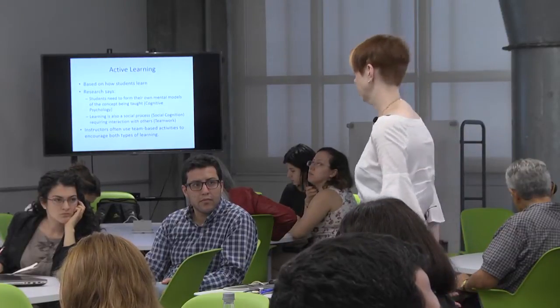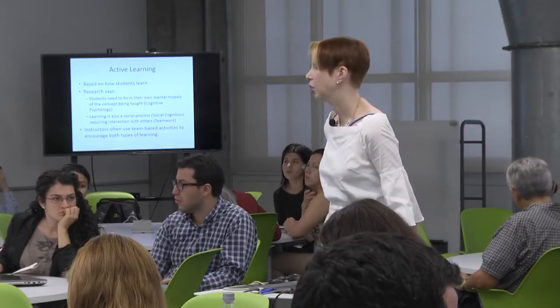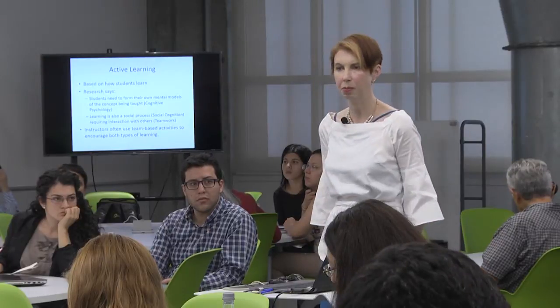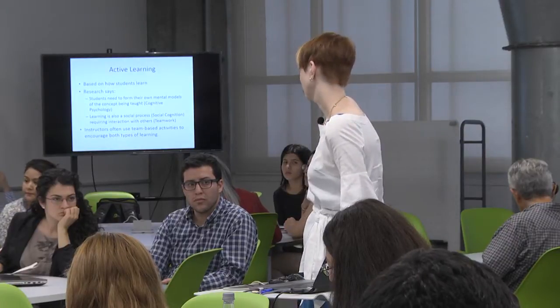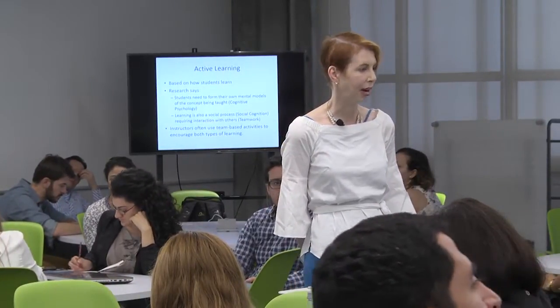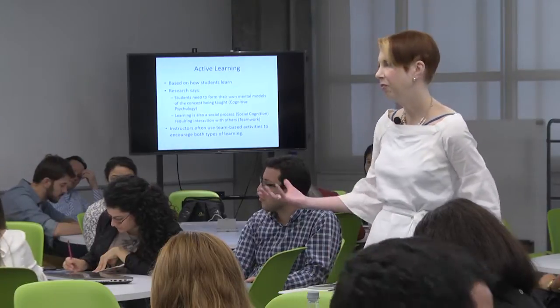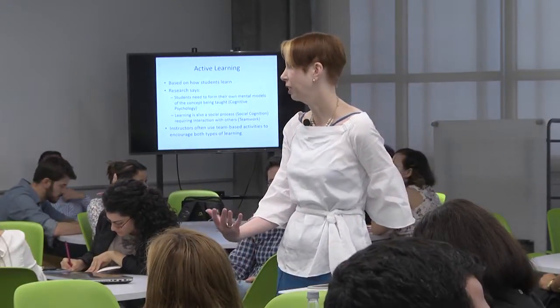The second key thing: we do better if we work with other people, because learning is also a social process — what's called social cognition. Johnson and Johnson, educational psychologists at the University of Minnesota, wrote a book called 'Learning Together and Learning Apart.' You can take four people, form them into a team, and if you do it right, that team is greater than the sum of its parts. They'll master material better. Social interaction really strengthens active learning, which is why working in teams is so important.